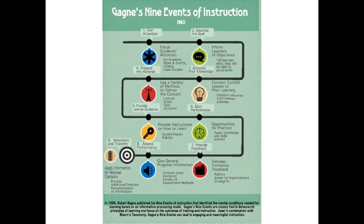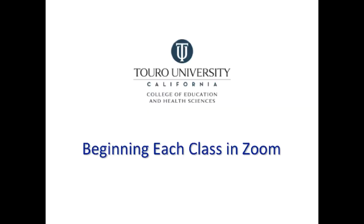A consistent, useful, and low-risk way of gaining students' attention is to spend 30 to 60 seconds going over an agenda that outlines what's going to happen for the rest of class. That was a quick overview and example of a way we can begin each class within our Zoom environments in this remote teaching setting.